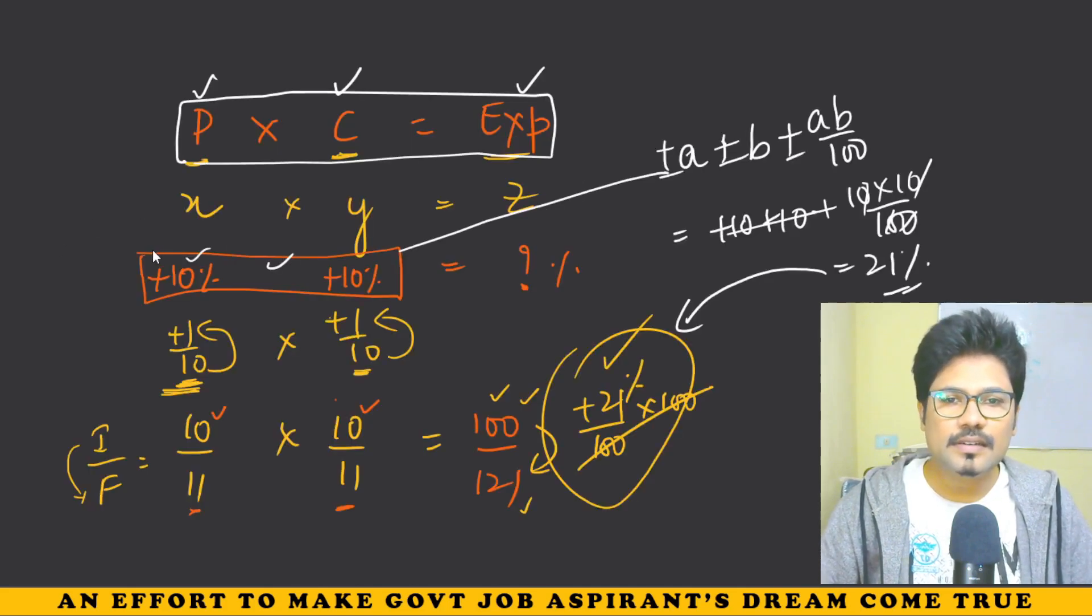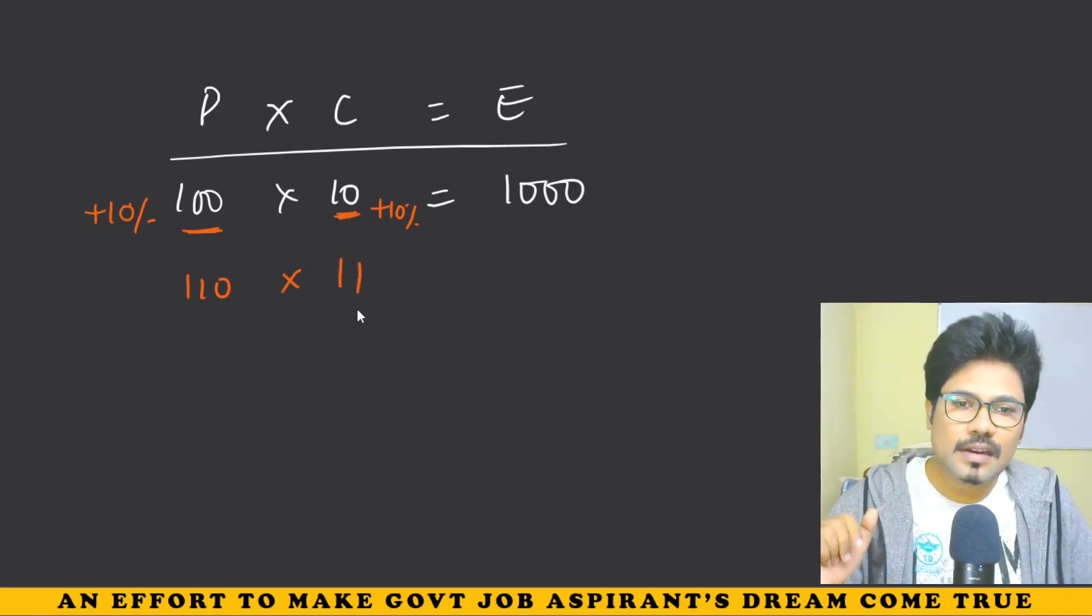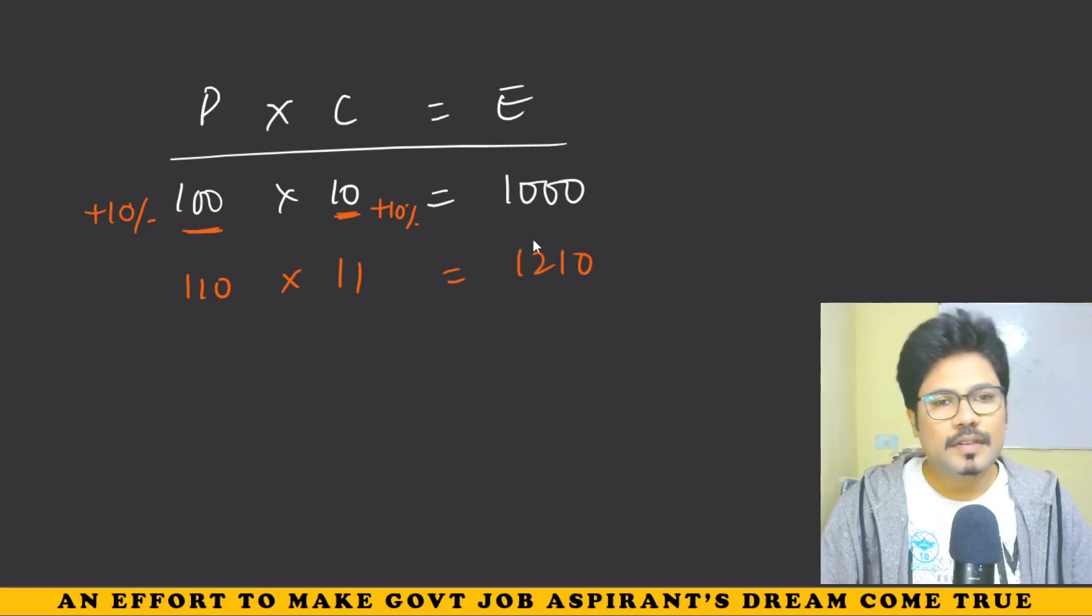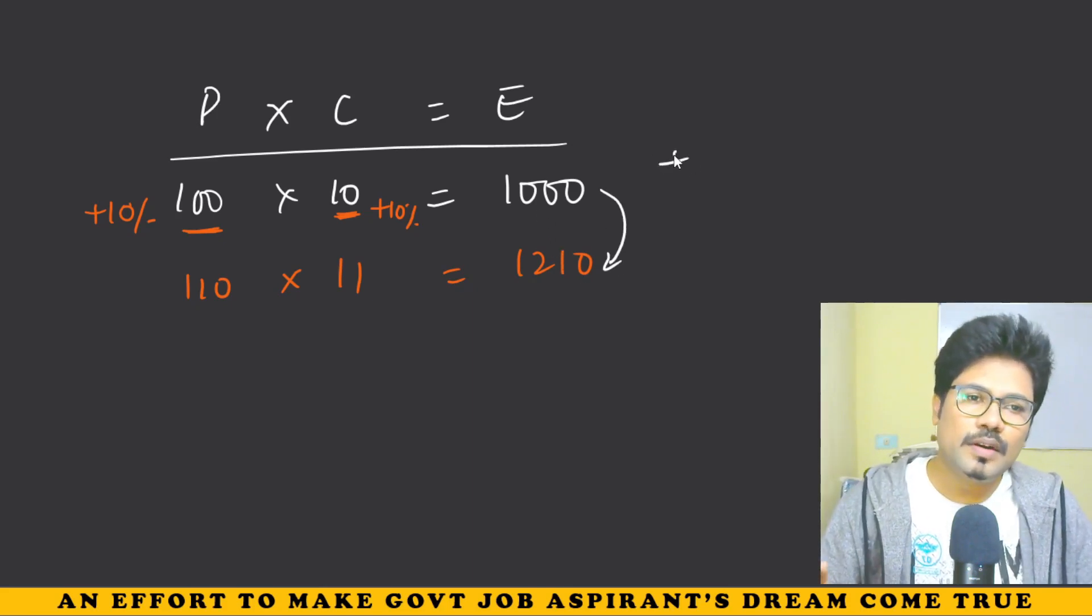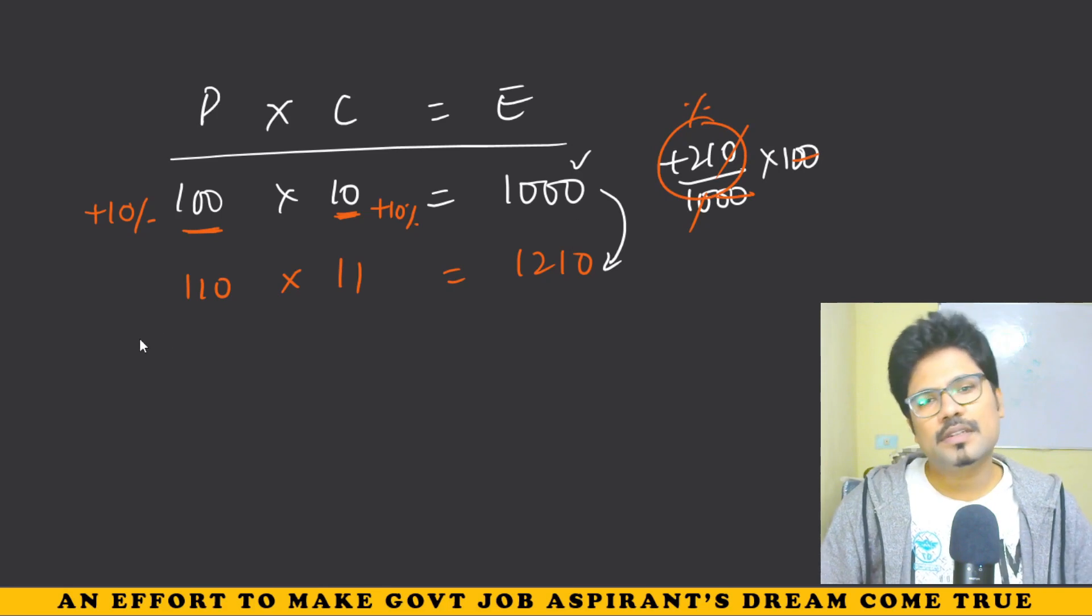Now, as we discussed, both increase 10%. In the first case, 10% increase means 100 becomes 110. In consumption, 10% means 10 becomes 11. Now the expenditure becomes 1210. That's 210 rupees more out of 1000, so 210 by 1000 into 100 gives plus 21%.